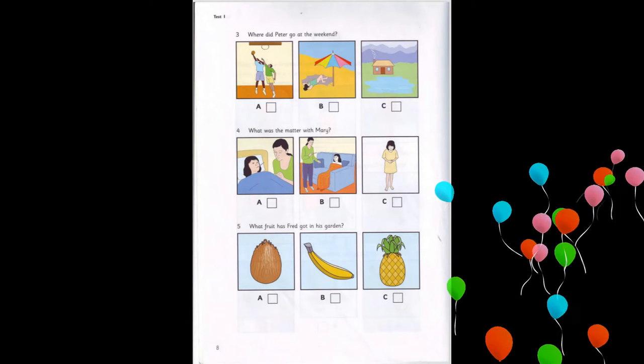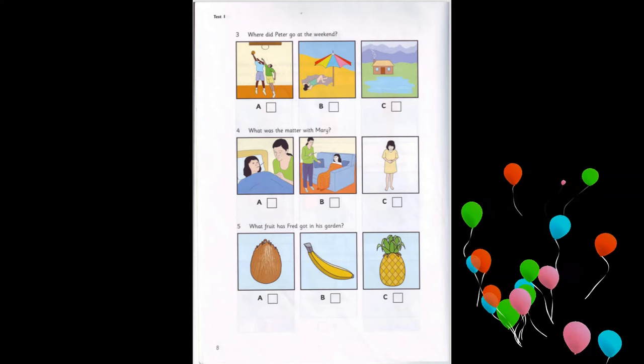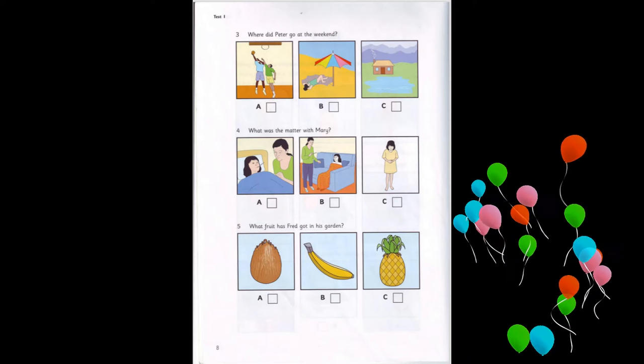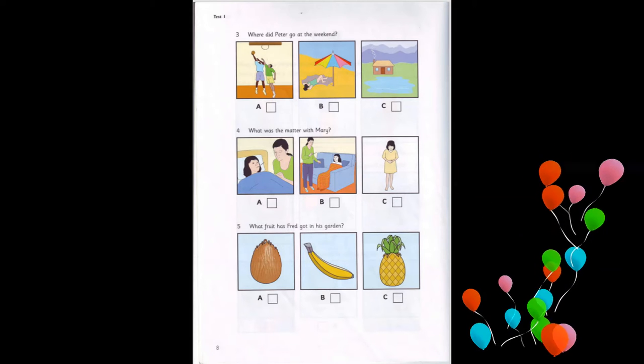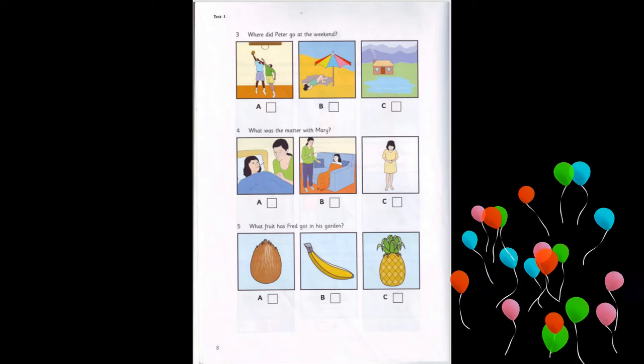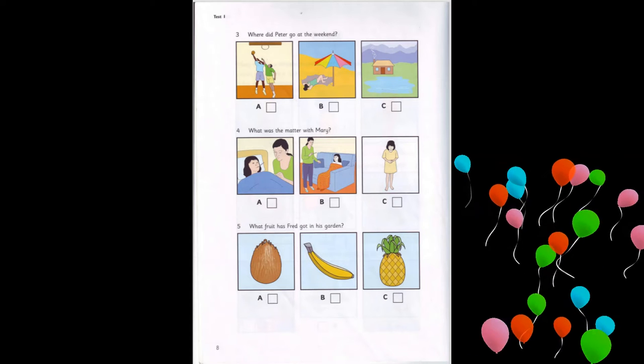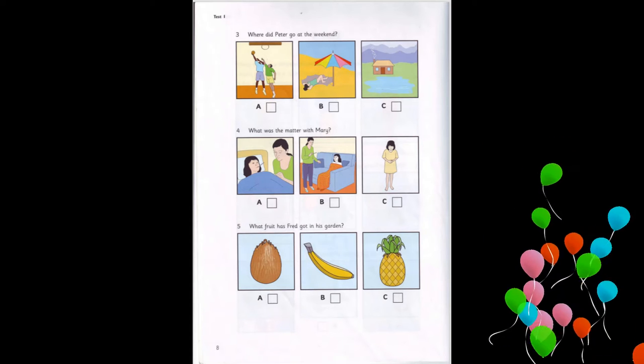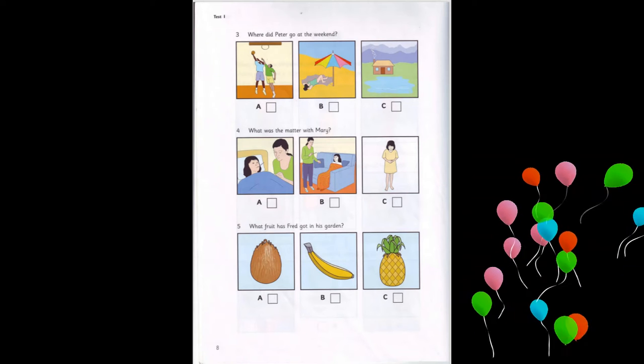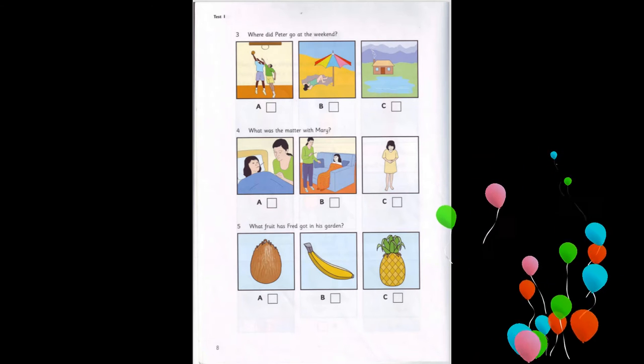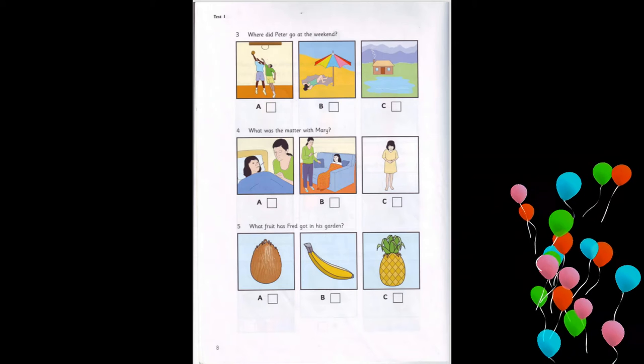Four. What was the matter with Mary? Mary couldn't come to school today. What was the matter with her? Did she have a stomachache? No. She had a temperature. Was she in bed? No. She sat on the sofa in the living room.